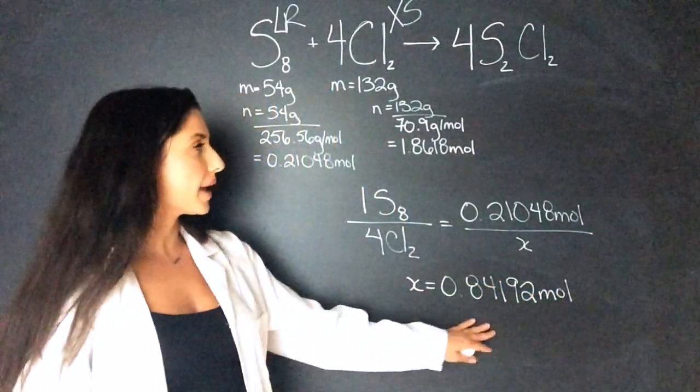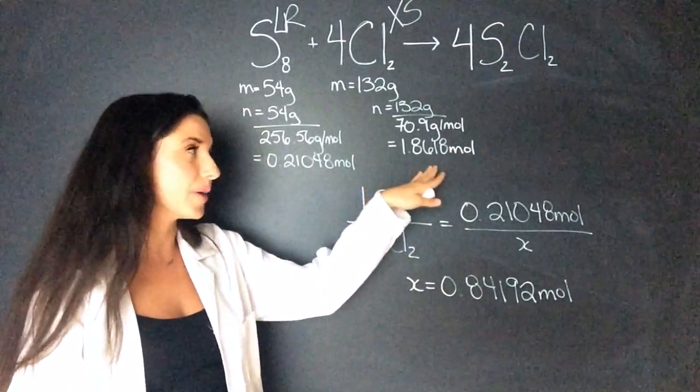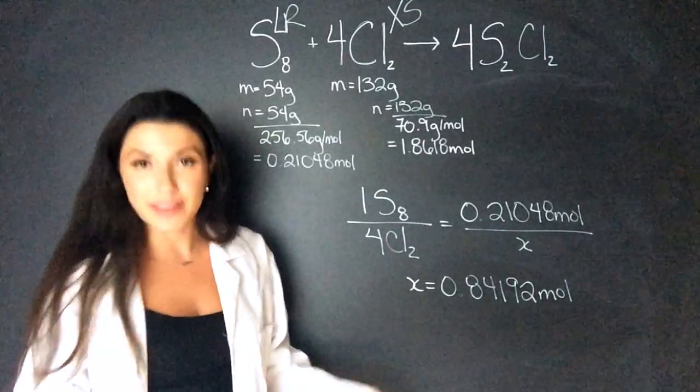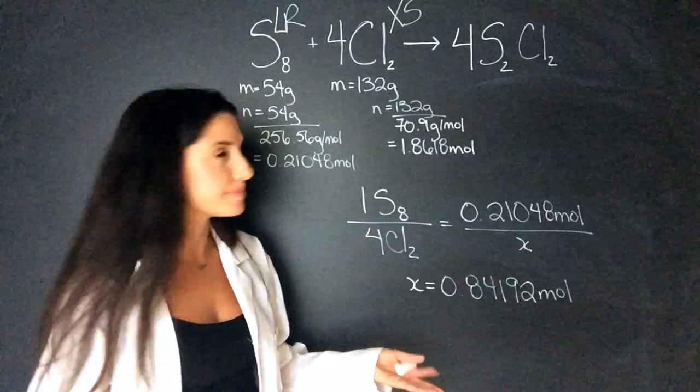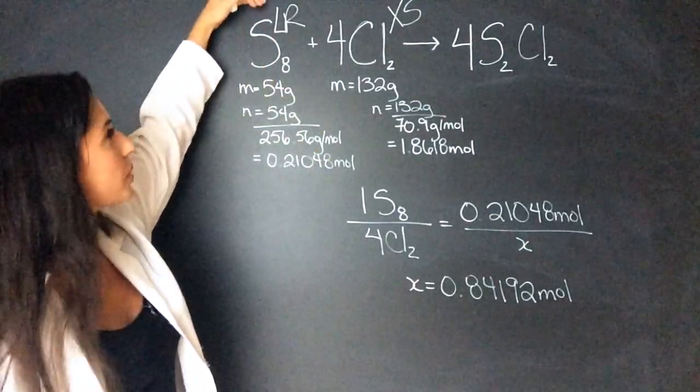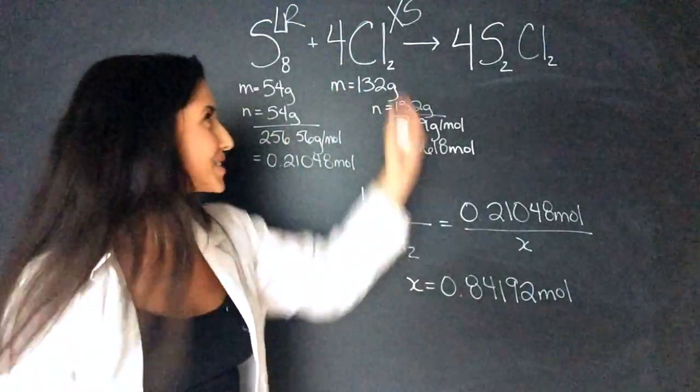So now I compare this to how much chlorine I actually have. I have 1.8618 moles of chlorine and this is less. So I know that I'm going to have extra chlorine. So I know that sulfur is my limiting reagent. So I put LR and chlorine is my excess reagent. So I put XS.